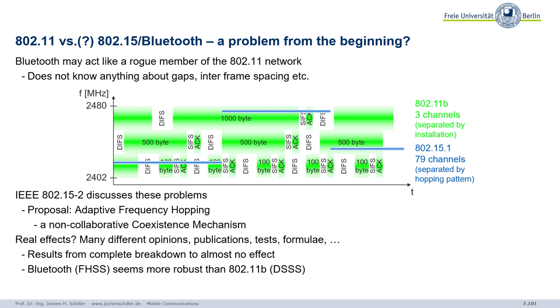Now consider what happens when you add Bluetooth: it has 79 channels, hops every 625 microseconds, and a nearby Bluetooth network may occupy a channel. The carrier sensing of wireless LAN — the clear channel assessment — detects the channel as occupied without knowing it is Bluetooth, and the wireless LAN stops sending. This was a known issue, and one IEEE proposal was adaptive frequency hopping.